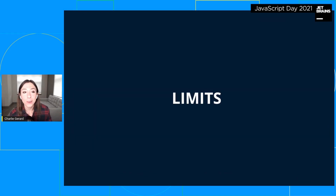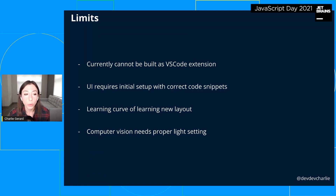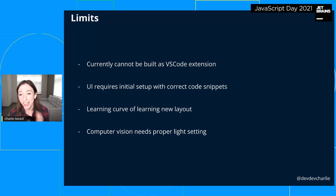Now for the limitations. Currently, this can't be built directly as a VS Code extension — my original idea was to do that, but you can't access the webcam feed as a VS Code extension, probably for security purposes. However, as an independent Electron app, I can use it with more editors than just VS Code — it would work with Atom, as a Chrome extension for Code Sandbox, or in various other environments.